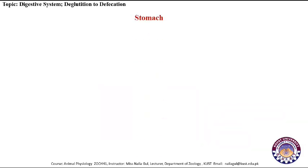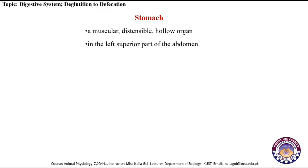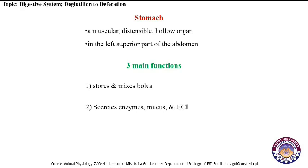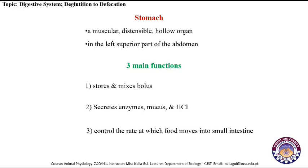The stomach is a muscular hollow organ which is distensible — it has the ability to stretch and expand. It is an enlarged segment of the digestive tract located in the left superior part of the abdomen. It performs three main functions: it stores and mixes the bolus received from the esophagus; it secretes substances like enzymes, mucus and hydrochloric acid; and it controls the rate at which food moves into the small intestine.